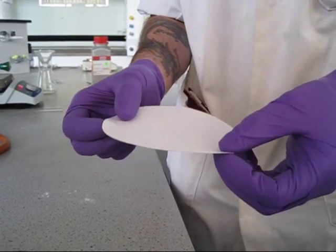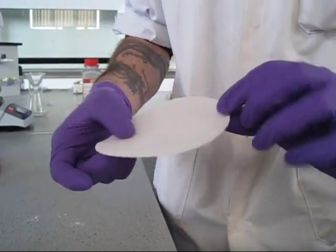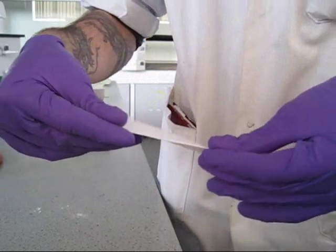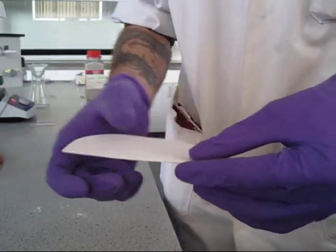To make a fluted filter paper, take your large filter paper, fold it in half, like so, and fold it in half again.